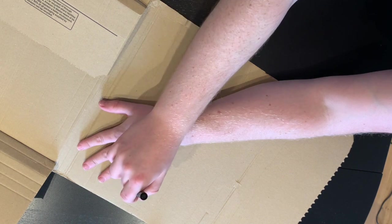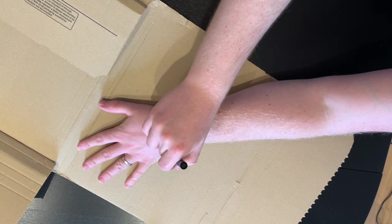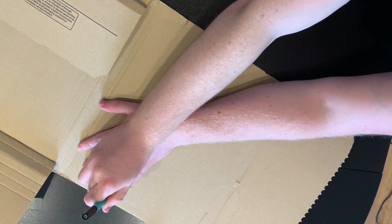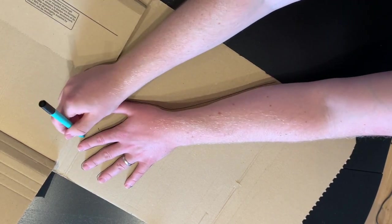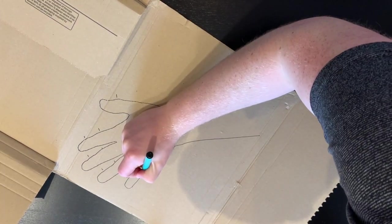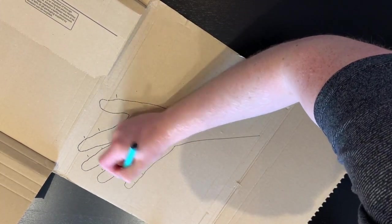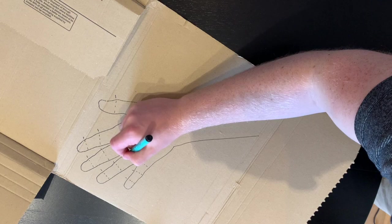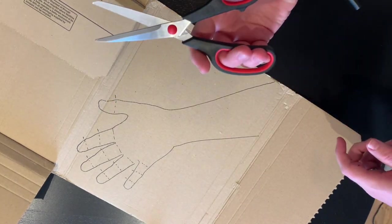The first thing you have to do is draw around your hand. Now you can mark on your knuckles with a dotted line and then we're going to cut it out.